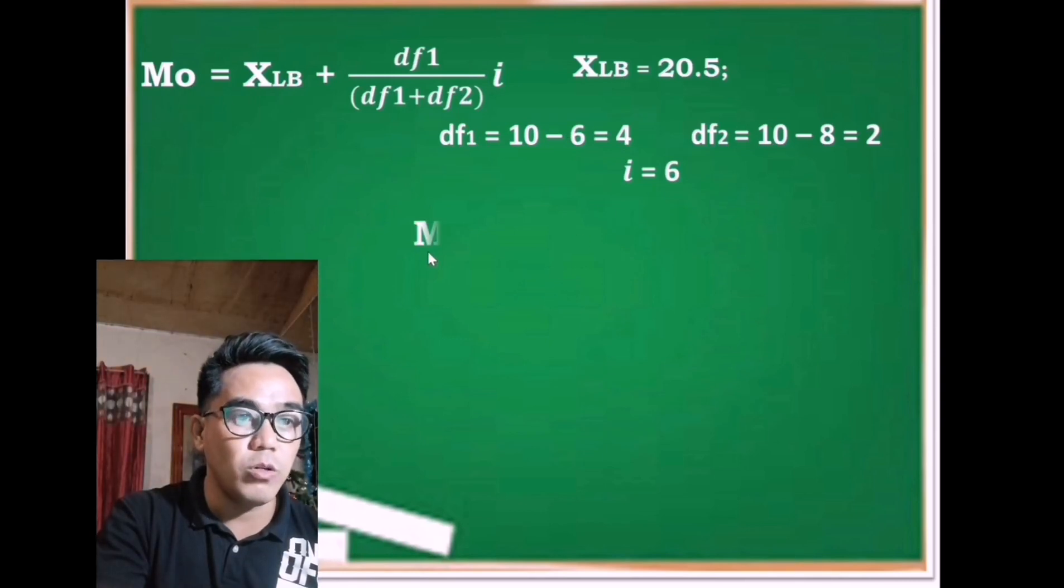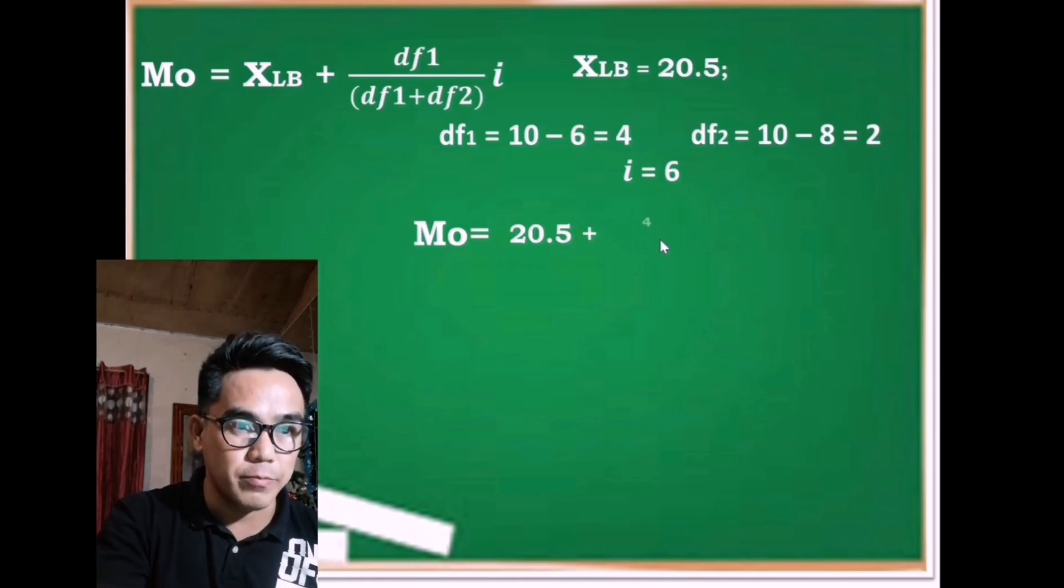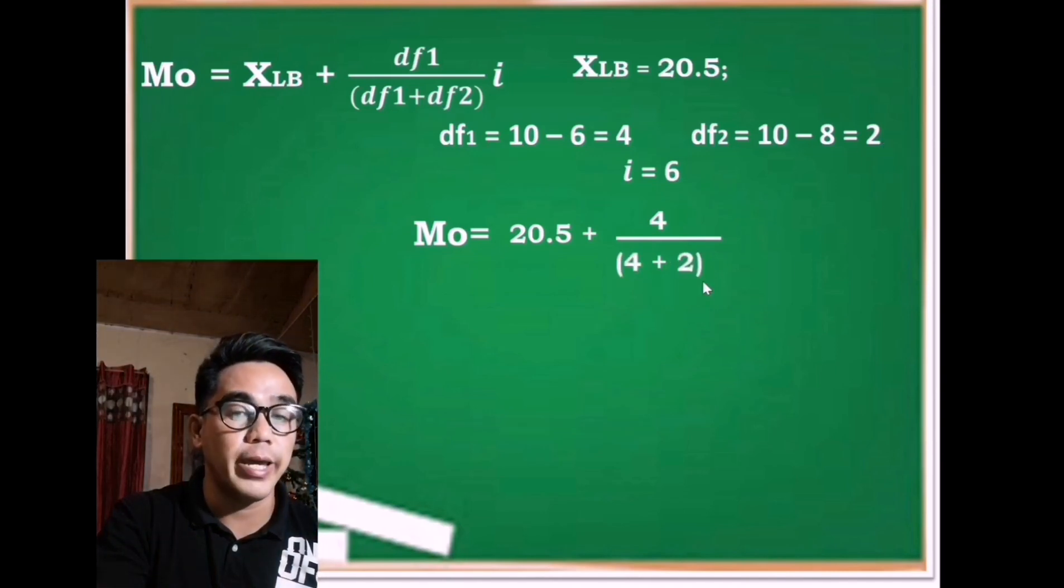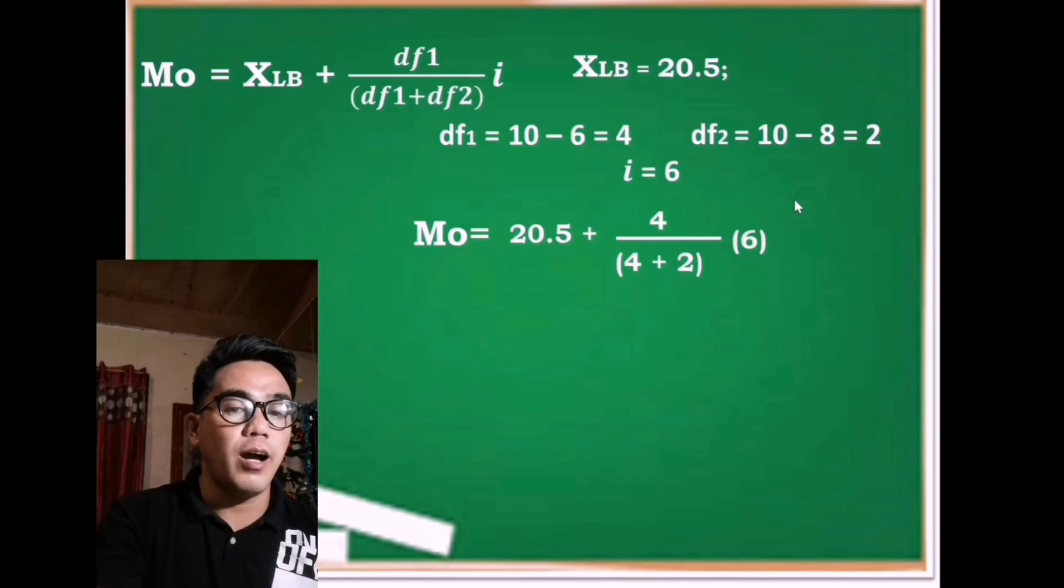Let us now substitute it one by one. Let us bring down Mo or mode equals the XLB is 20.50. Bring down here, then add because that is plus. Then the df sub 1 is 10 minus 6 which is 4 over df sub 1, bring down 4. The df sub 2 is 2. We have 4 plus 2. And the class size of the class limit or class interval is 6. Put it here.